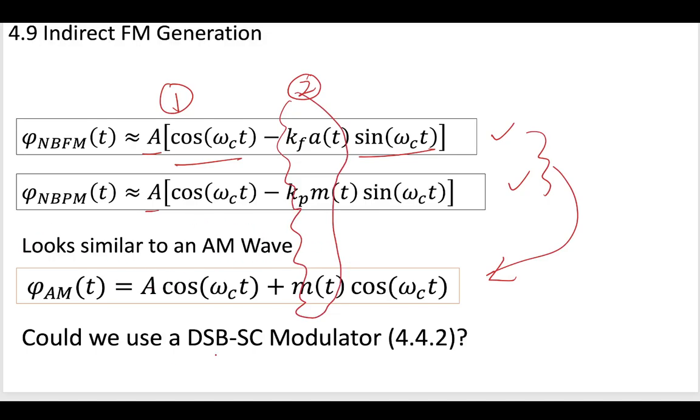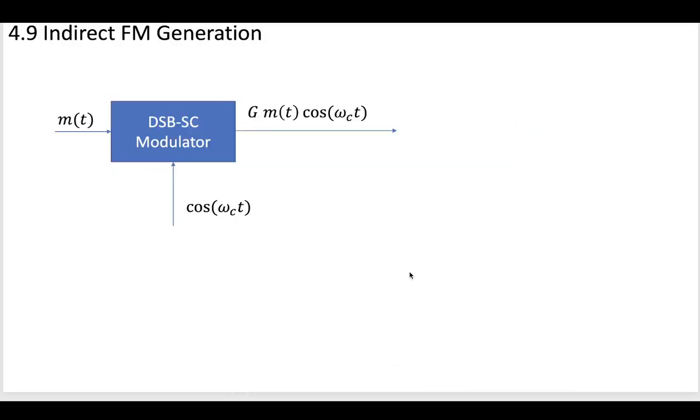We see this for both the AM wave and the angle-modulated waves. Because of this similarity, the question we should ask is: could we use a DSB-SC modulator? We looked at a variety of devices for AM modulation. Could we do narrowband modulation for angle modulation using these? The answer is yes—this is a very good starting point.